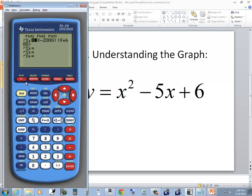I'll press my Y equals, press my clear, and then I've got my x squared. So there it is, x squared minus 5x plus 6. Now I'll press graph.